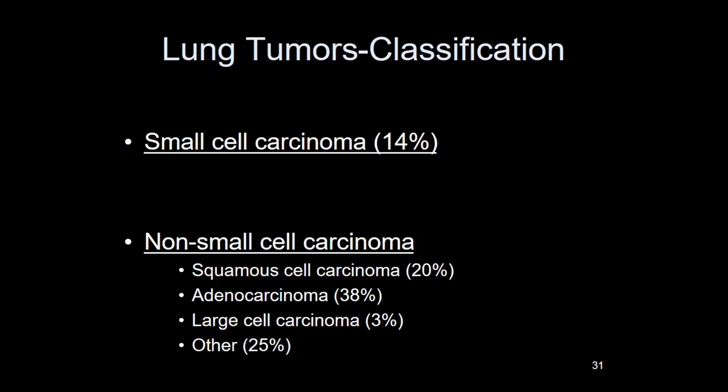Small cell carcinoma arises from neuroendocrine cells. Five-year survival is about 10–15%. First, make sure the patient is a smoker — almost 100% are. These patients are not surgical candidates; if I call small cell carcinoma on a frozen section, the surgeon stops and closes. At diagnosis, small cell is almost always metastatic — it responds to chemotherapy but outcomes remain poor.